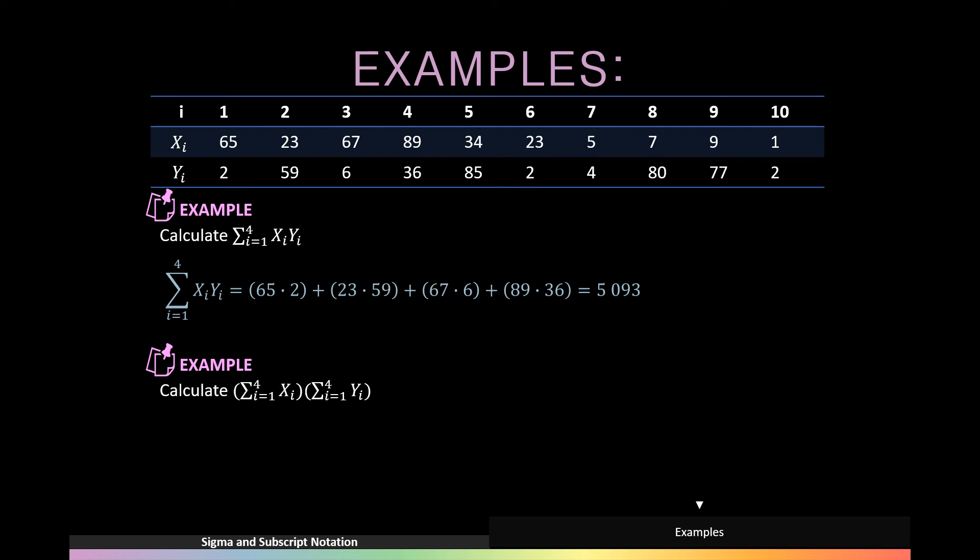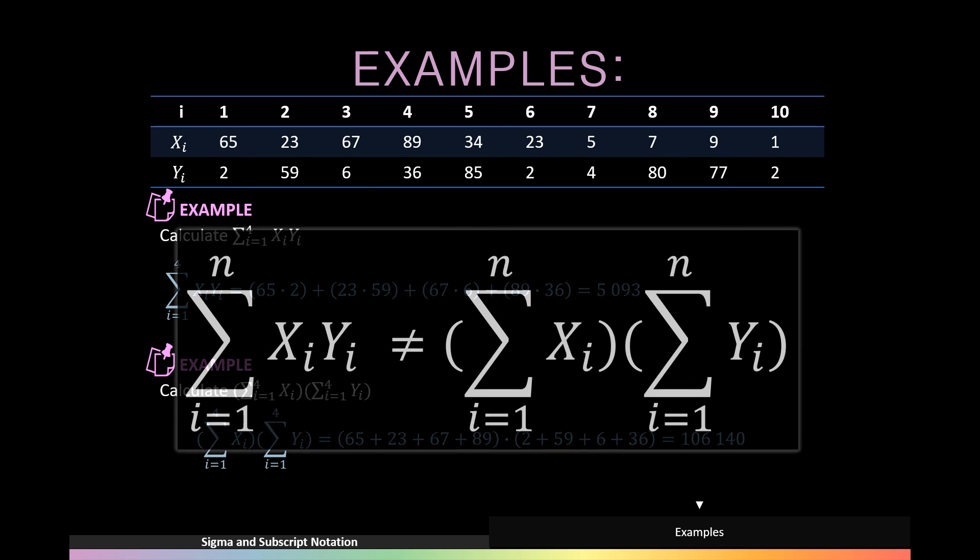However, if we were told to calculate the summation of Xi from i is equal to 1 to 4 multiplied by the summation of Yi from i is equal to 1 to 4, we would do this by summing the individual values and multiplying to get an answer of 106,140. And this shows us that the summation of a product is not equal to the product of summations.